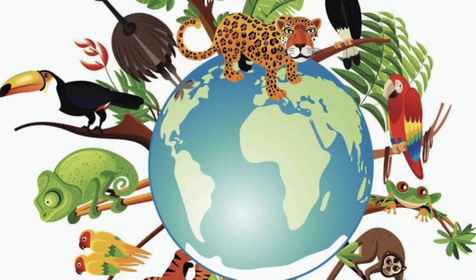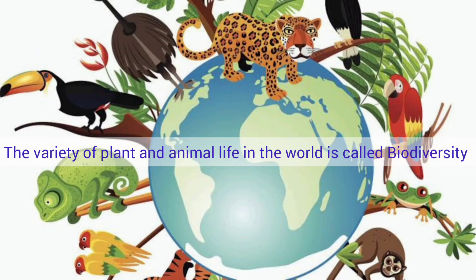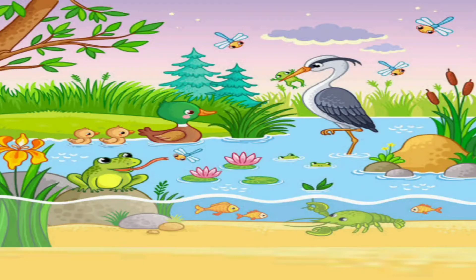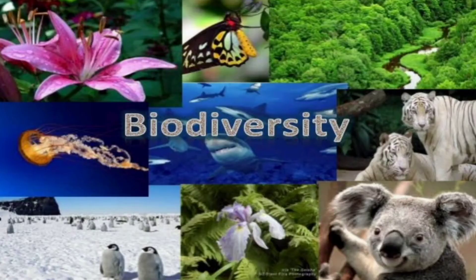Or simply we can say that the varieties of plants and animal life in the world is called biodiversity. Jab kisi sthan mein living things yani sajeevon ki bhinnata — varieties — paai jaati hai, toh use us sthan ki biodiversity kehte hai.